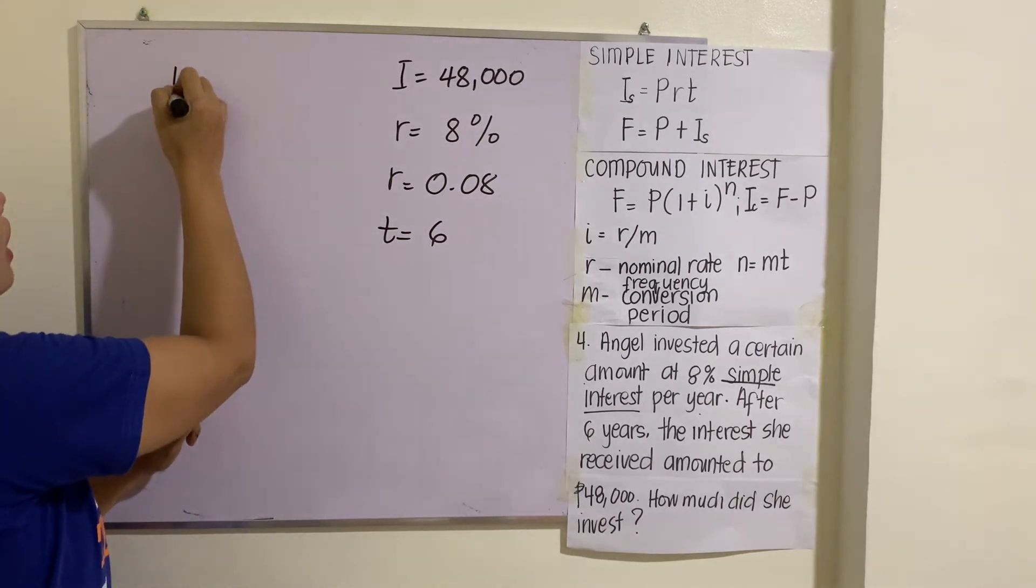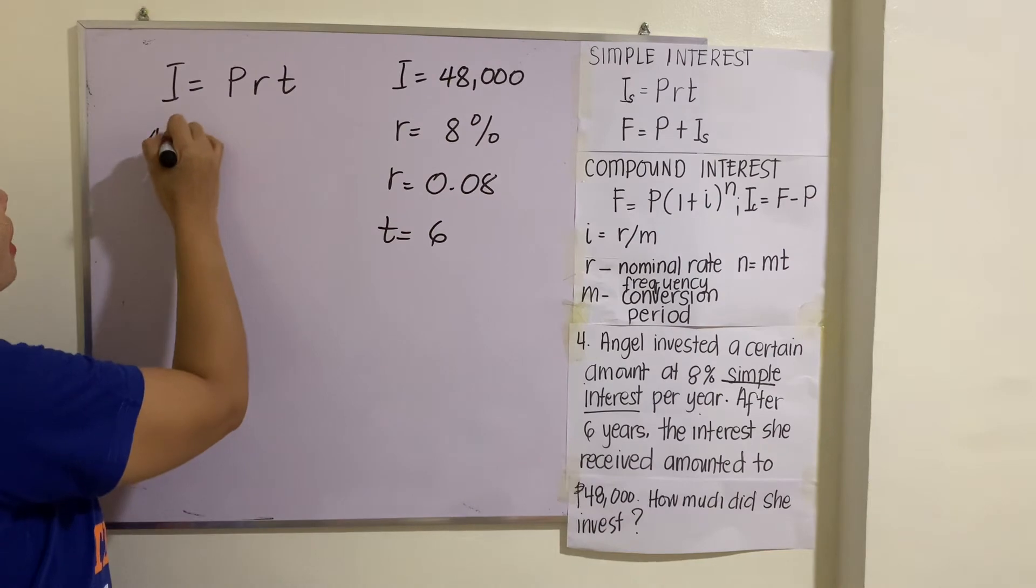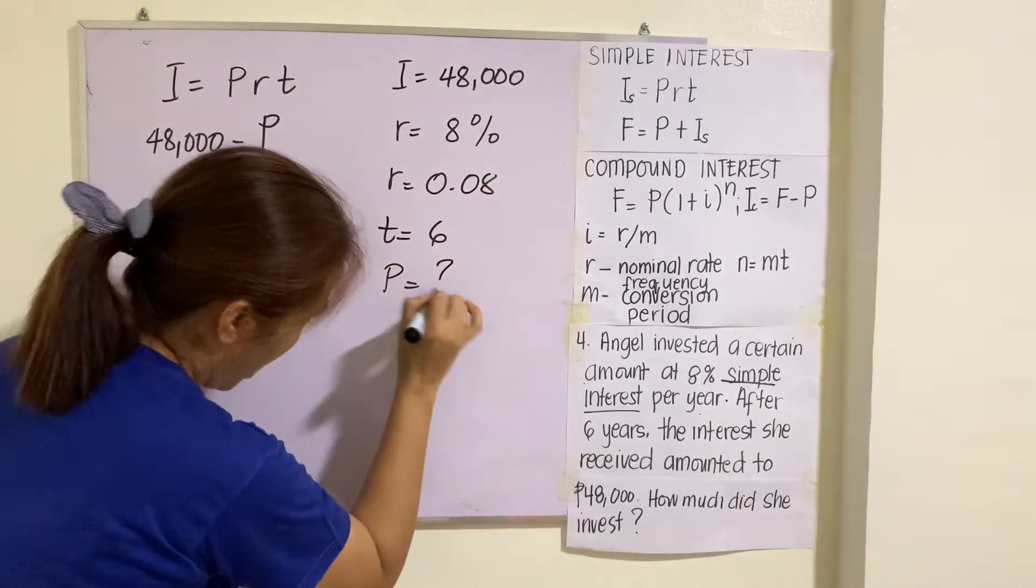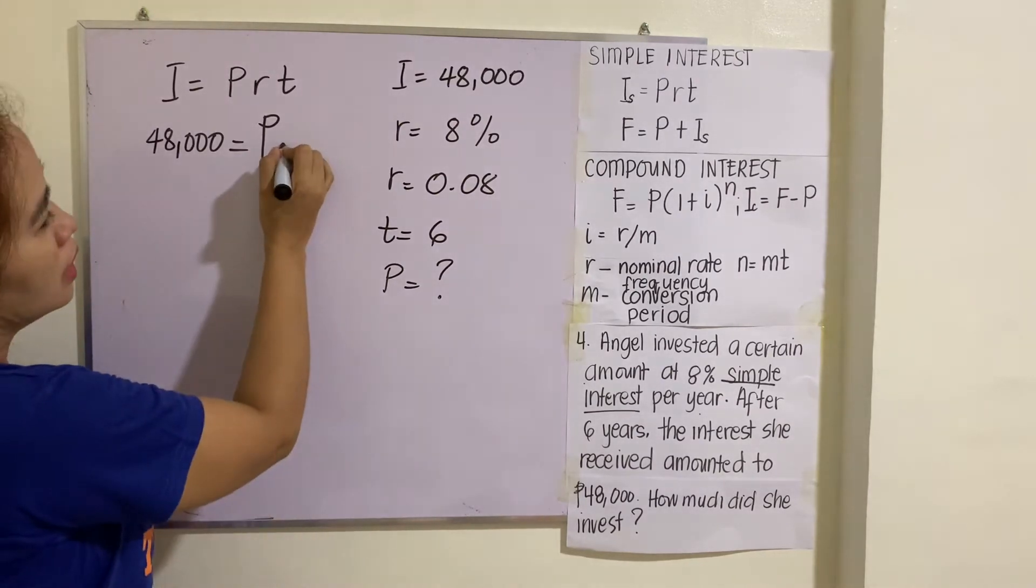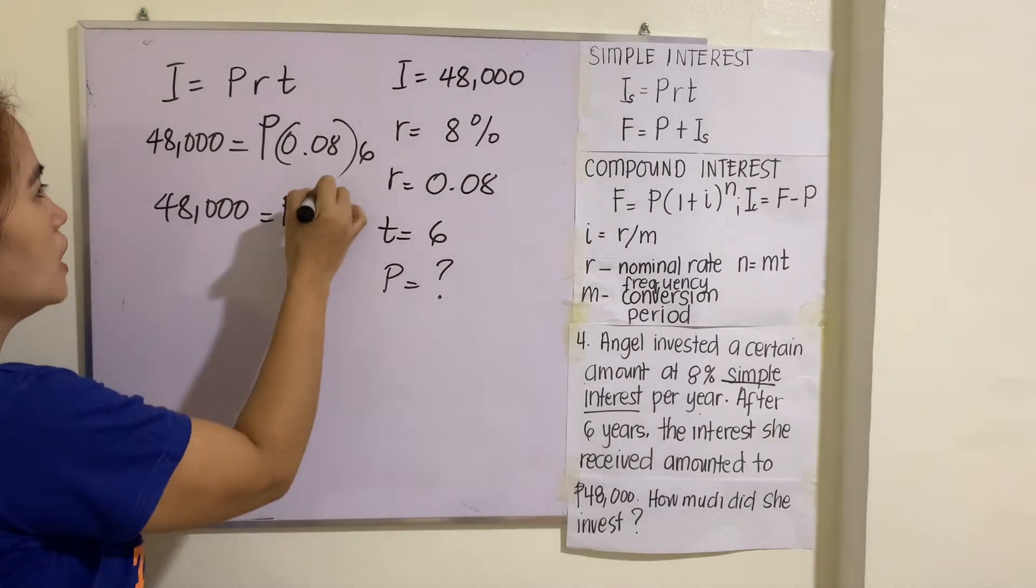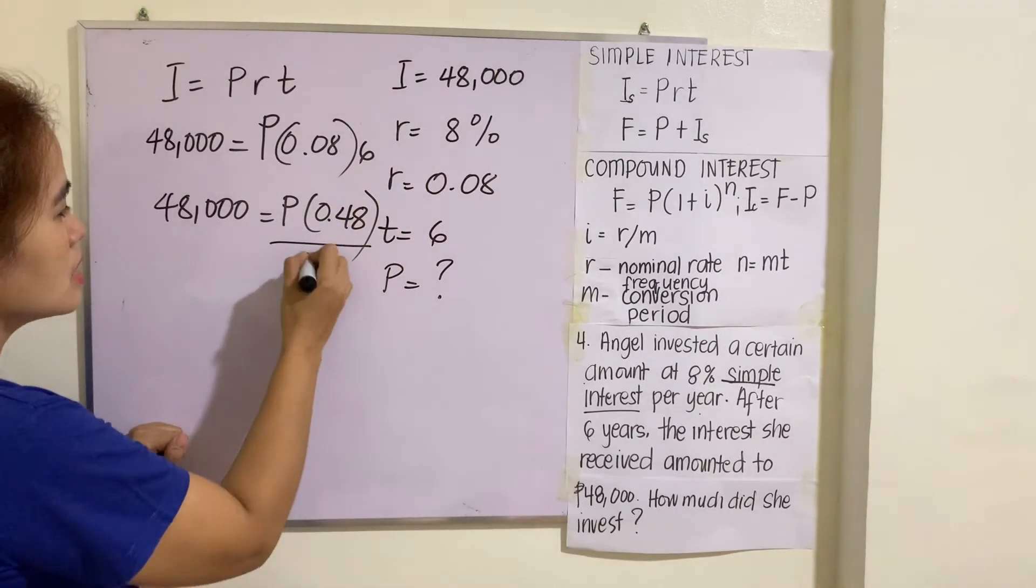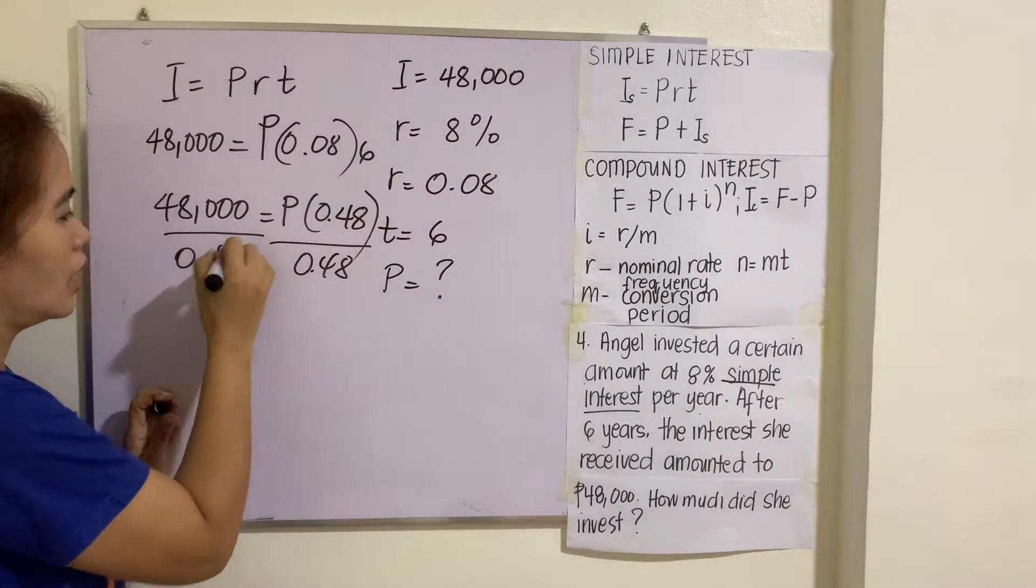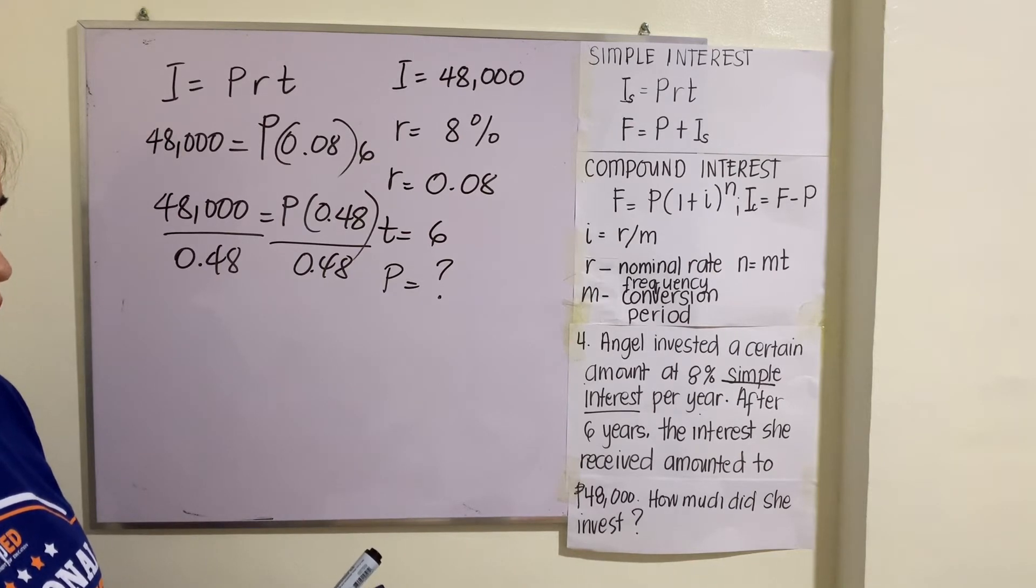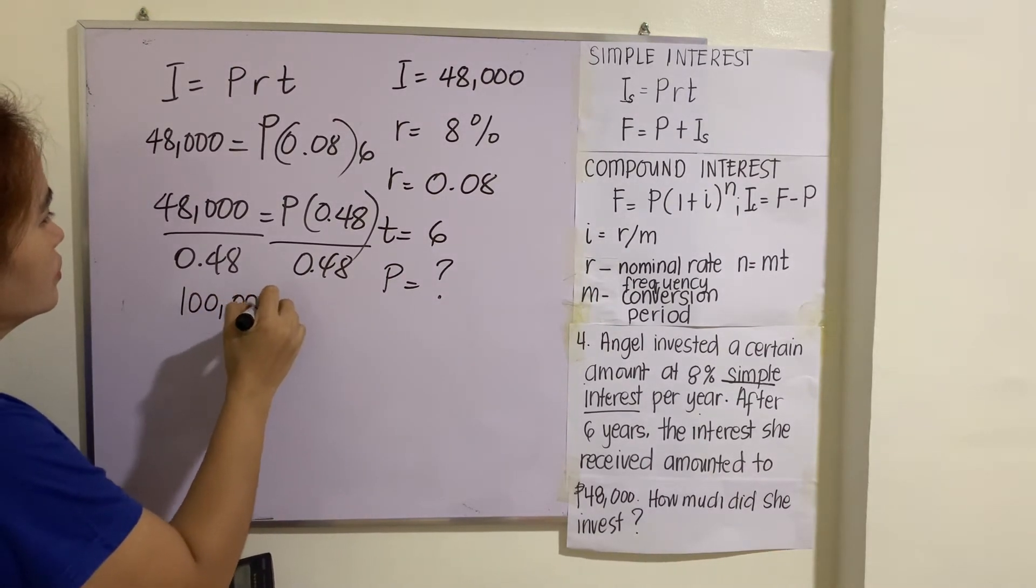We are looking for P. So I = PRT. I is 48,000 = P × 0.08 × 6. So 48,000 = P × 0.48. Divided by 0.48. You will be getting 48,000/0.48 = $100,000.